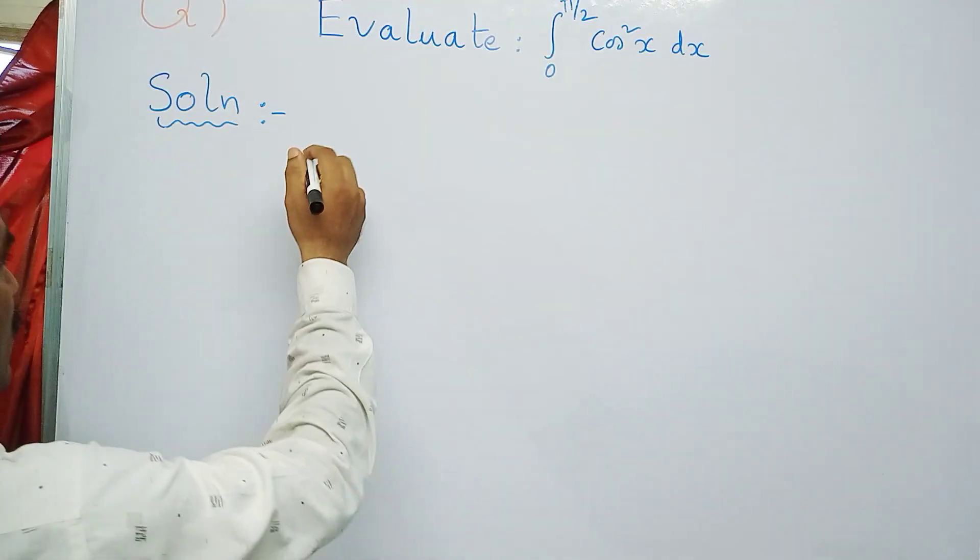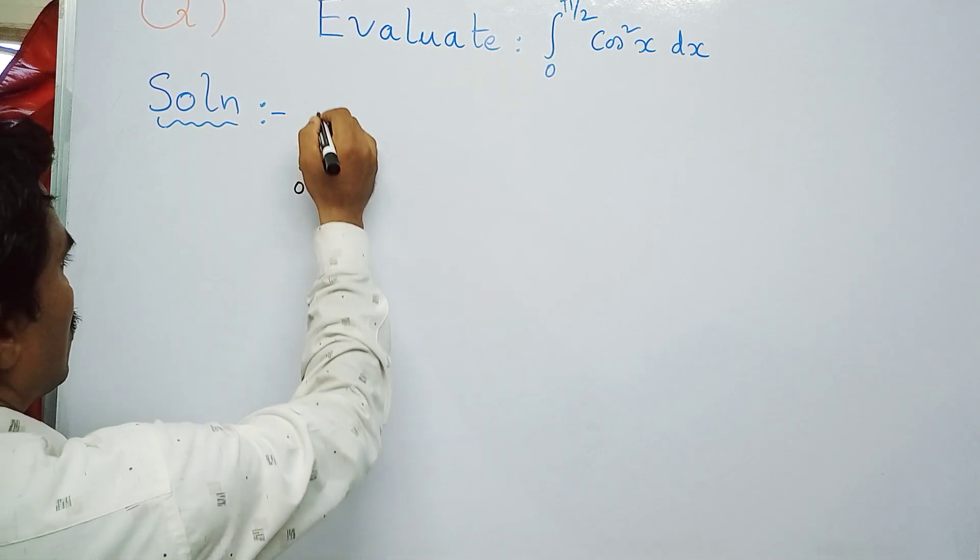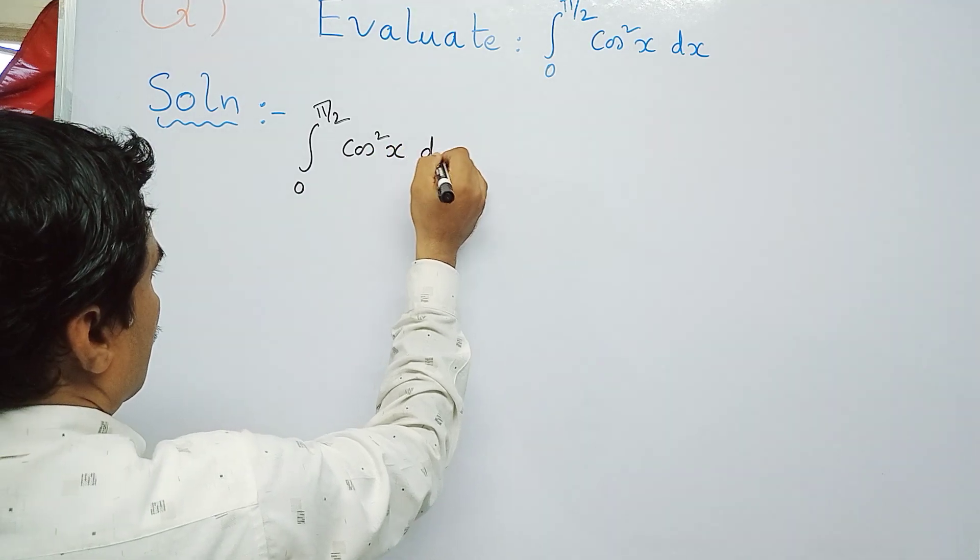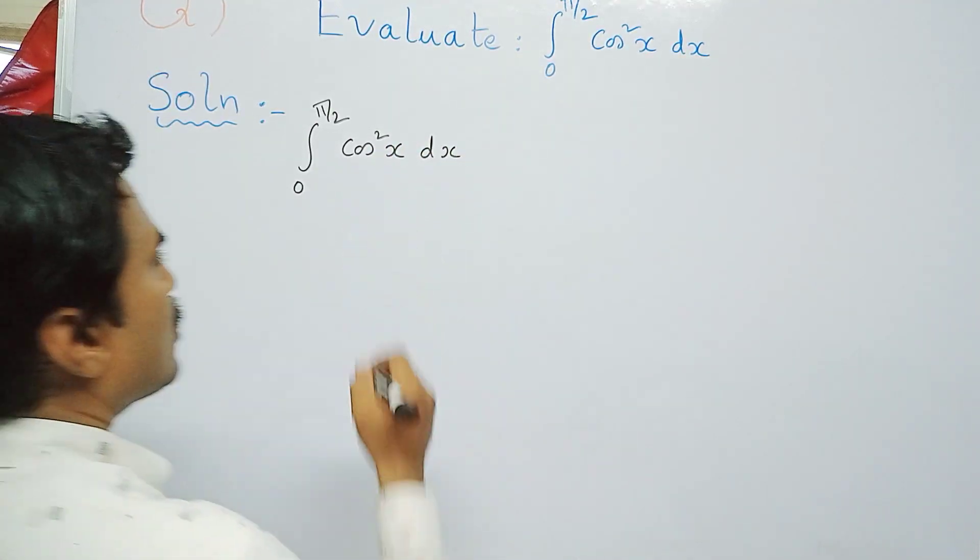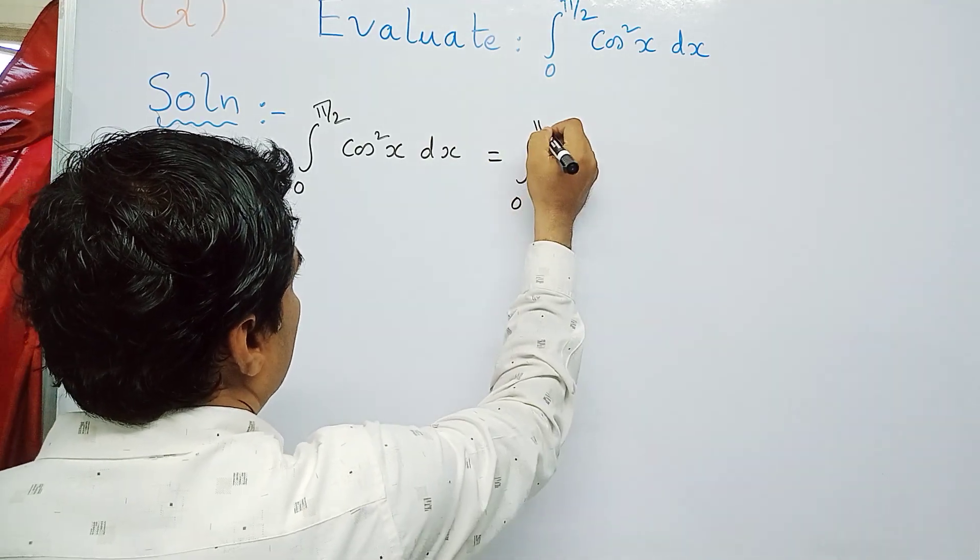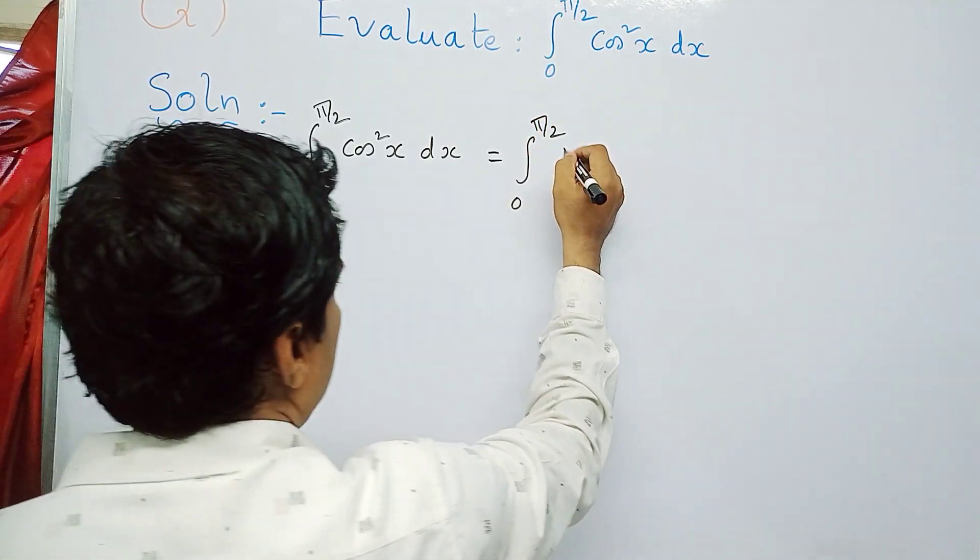You can write it as integral 0 to π/2 cos²x dx. As I told you before, first you need to use the trigonometric formula of cos²x. So this can be written as integral 0 to π/2, cos²x can be written as (1 + cos2x)/2 dx.